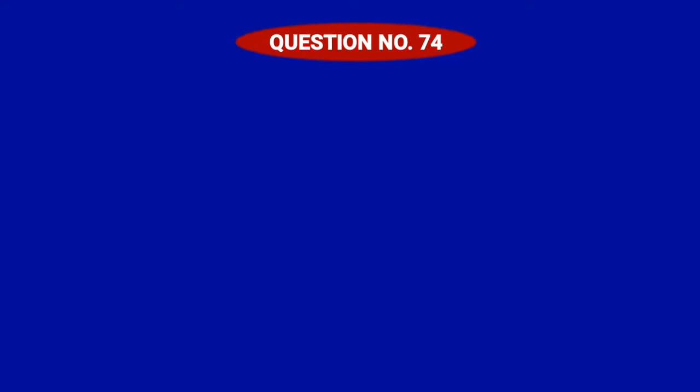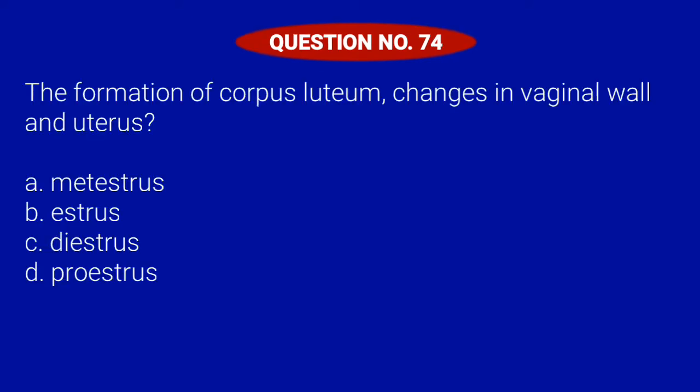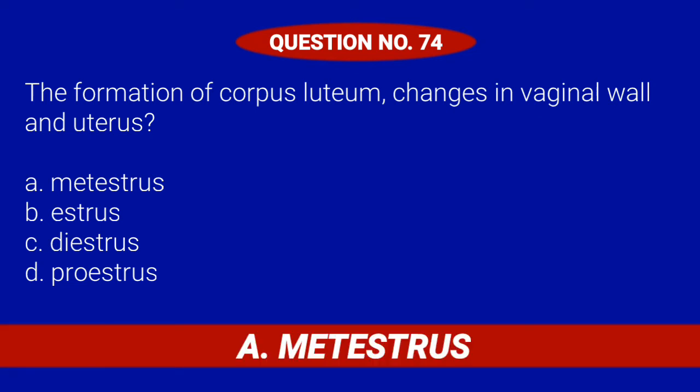Question number 74. The formation of corpus luteum — changes in vaginal wall and uterus. Letter A: Metstress. Letter B: Estress. Letter C: Diestress. Or Letter D: Prostress. Correct answer is Letter A: Metstress.